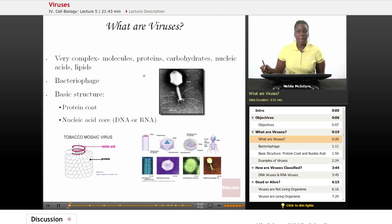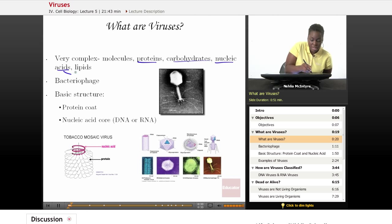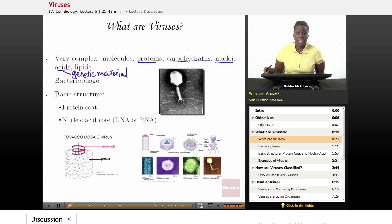So let's start by talking about what a virus is. A virus is actually a very complex molecule made of proteins, carbohydrates, nucleic acids, which are basically the genetic material that it can pass to its host cell to make more viruses, and lipids.